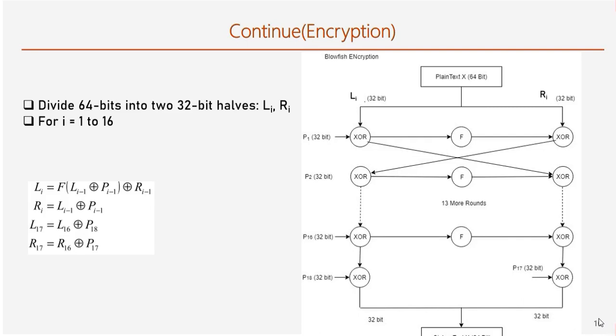For 16 rounds we have used 16 sub-keys. The remaining two sub-keys are used for undo swap. The output of left half from round 16 is XORed with sub-key of P18, and right half is XORed with sub-key of P17. This step is known as undo swap. So this is the equation for the mathematical operations of encryption process.